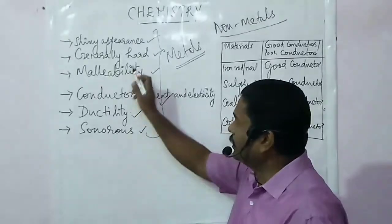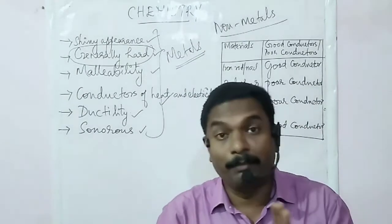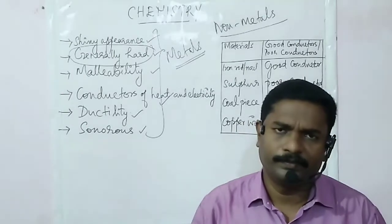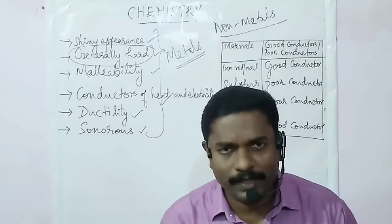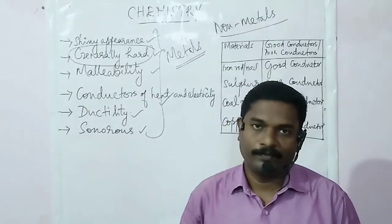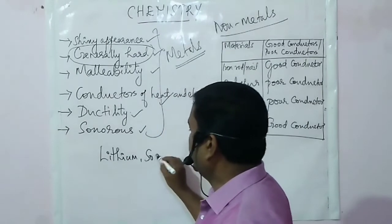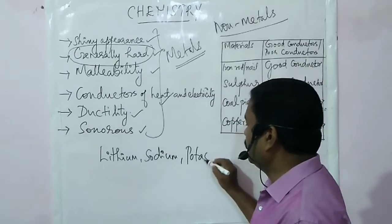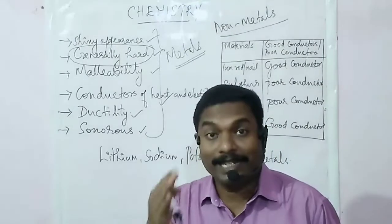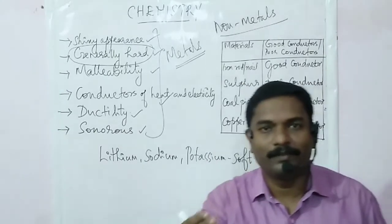While discussing the hardness of metals, we noted that hardness changes from metal to metal. Are there any soft metals? Yes, some exceptional metals exist. For example, lithium, sodium, and potassium are soft metals — they can be cut with a knife. They are so soft that you can cut them with a knife.